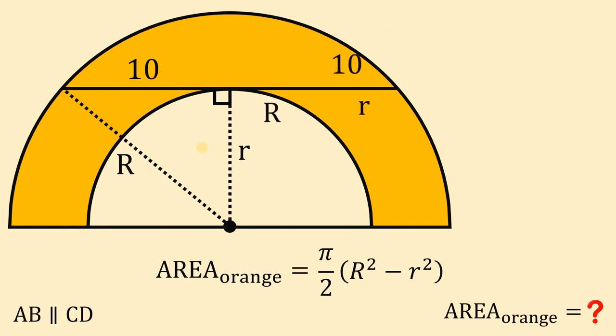If we do that, we get capital R squared—the hypotenuse—equal to the sum of the squares of its legs, which is r squared plus 10 squared. 10 squared is simply 100. If we subtract small r squared from both sides, this gives us capital R squared minus small r squared.